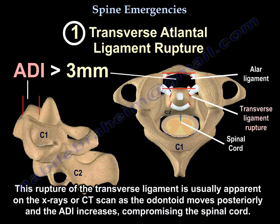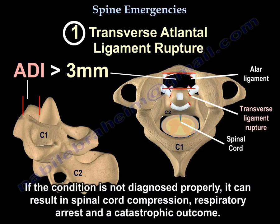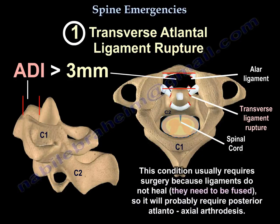You may get spinal cord compromise as the odontoid process moves posteriorly towards the spinal cord. This rupture of the transverse ligament is usually apparent on x-rays or CT scan as the odontoid moves posteriorly and the ADI increases, compromising the spinal cord. If not diagnosed properly, it can result in spinal cord compression, respiratory arrest, and catastrophic outcome. This condition usually requires surgery because ligaments don't heal — it will require posterior atlanto-axial arthrodesis.